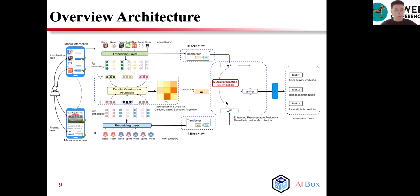In this paper, we aim to propose a general user representation learning method which can be applied to various downstream tasks such as user activity prediction, user attribute prediction, and item recommendation.